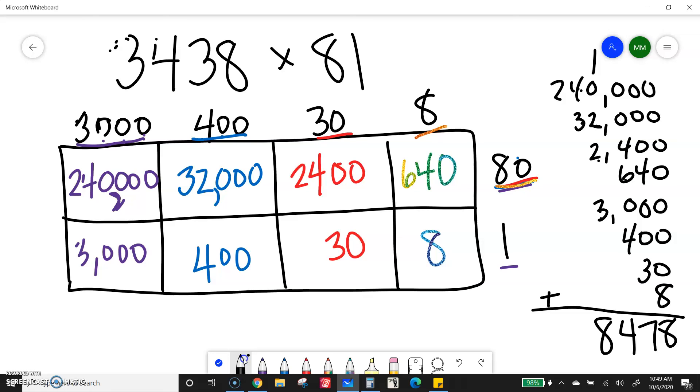4 plus 3 is 7. And just my 2 there. Count 1, 2, 3. And put my comma. So I get 278,478.